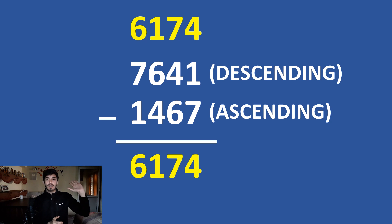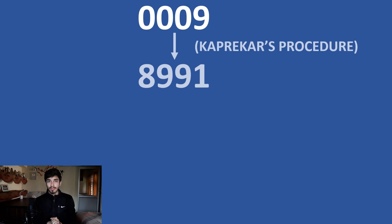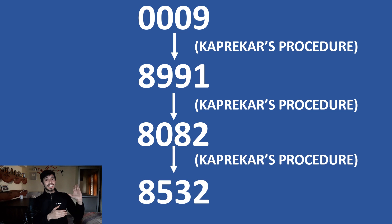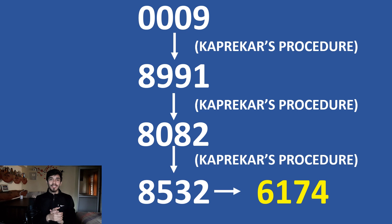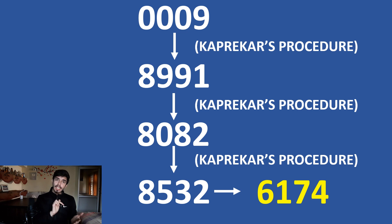We can also try it with 0009, and we will reach 6174. So it is really a fascinating thing, right? It shows us that there is a pattern in this universe. If we apply this procedure on any four-digit number, we will always reach this number.